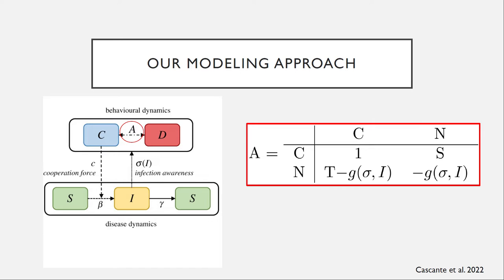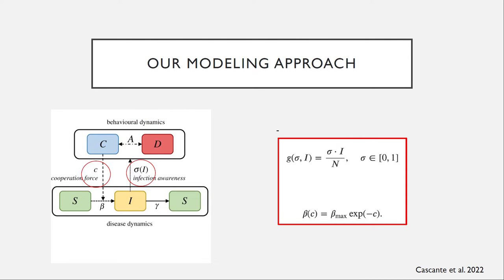The interesting part is how we model the behavioral dynamics. You can decide between two strategies, and each strategy has a payoff as in a prisoner's dilemma. In those payoffs, we discount a value G in each of the defecting strategies. That value G is associated with the parameter sigma — the infectious awareness — so people can cooperate or defect modulated by that awareness parameter. The other simple link is: the more people cooperate, the less transmission you have, so transmission is dynamically coupled with the number of cooperators in the system.